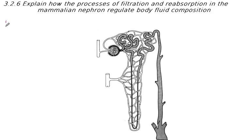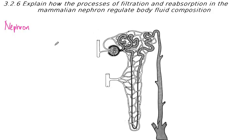Remember that these are microscopic tubules — there are millions of them spread throughout the kidneys. Anything that brings blood into the kidneys is first of all called an artery. In this case it's called the renal artery, which is this structure here.